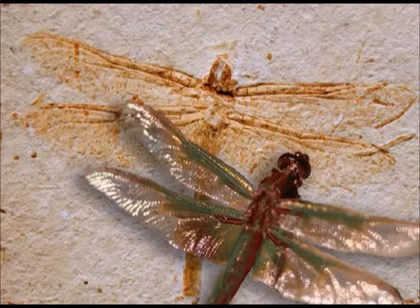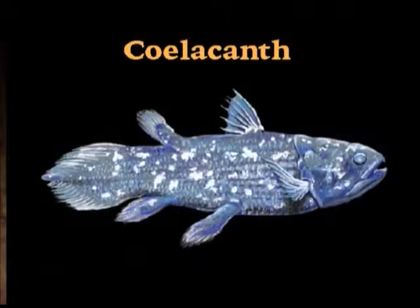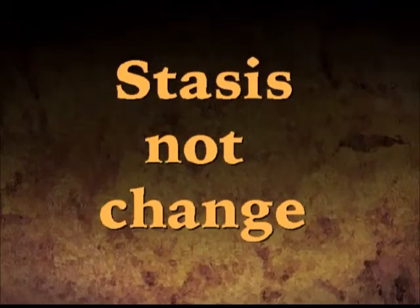Not even the angle of the wing has changed. Where's all this evolution occurring? Here's a Denver Museum exhibit: the first sharks evolved 450 million evolutionary years ago, and sharks have changed very little over the years. The coelacanth was thought to have been extinct for almost 100 million years, until they found out fishermen off the coast of Madagascar had been catching them and eating them for years. Stasis, not change.